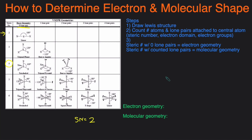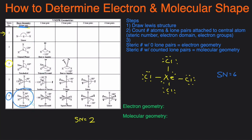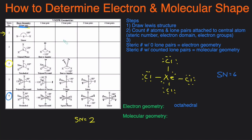Let's take a look at one last example. Let's say we had xenon with Cl around each of the corners of the xenon, giving xenon an additional two lone pairs. The first step is to determine the steric number: 1, 2, 3, 4 atoms plus 1, 2 lone pairs — giving us a steric number of 6. For the electron geometry, 6 with zero lone pairs gives us octahedral. For the molecular geometry, we actually had two lone pairs, so 6 with two lone pairs gives us square planar.